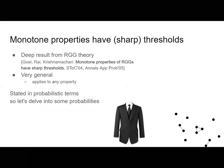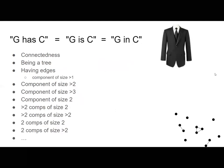It turns out that monotone properties of random geometric graphs have thresholds. In terms of notation: the graph has a certain property — we can also say G is in that property, like G has connectedness, meaning G is connected, or G is in the set of connected graphs.